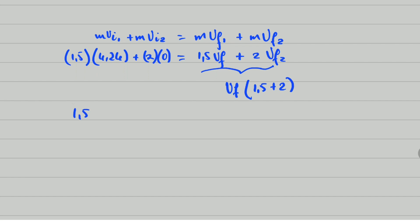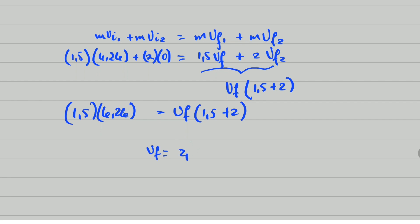So: 1.5 × 6.26 equals final velocity × (1.5 + 2). Calculating gives a final velocity of 2.68 metres per second. The marks here are: one for the law, one for the left-hand side substitution, one for the right-hand side substitution, and one for the final answer — four marks total.